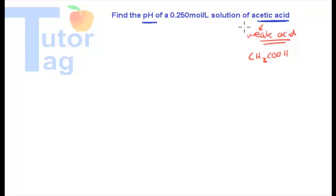Basically what we've got to do here is find the pH of a weak acid. I'm going to write out the chemical reaction for acetic acid, CH3COOH.